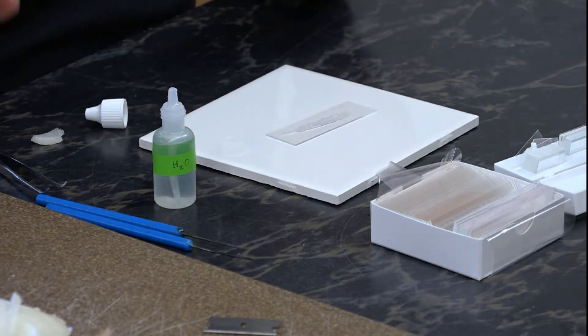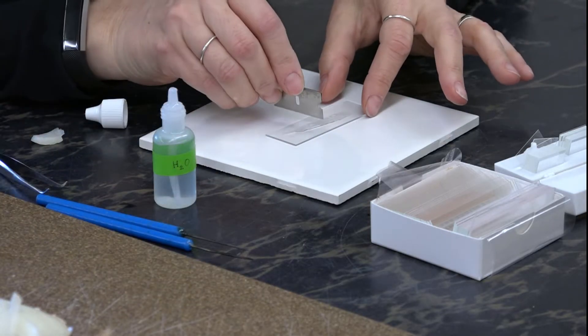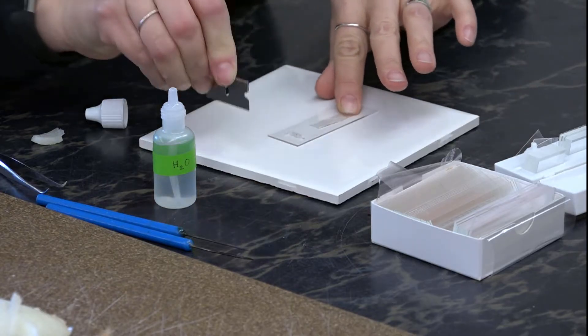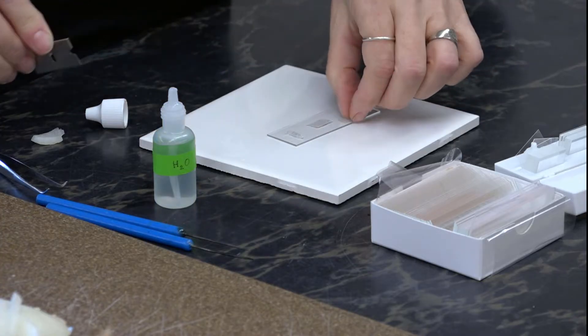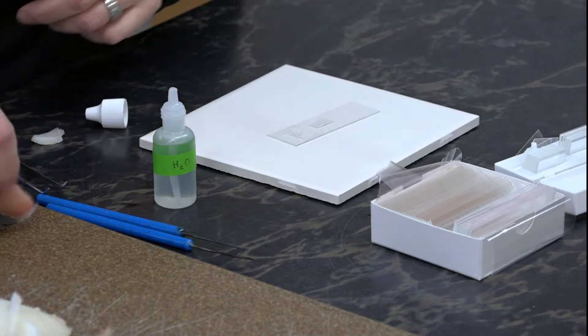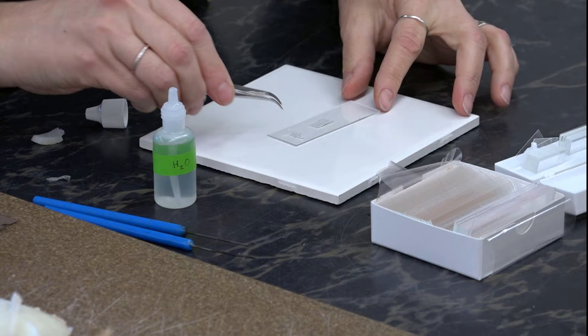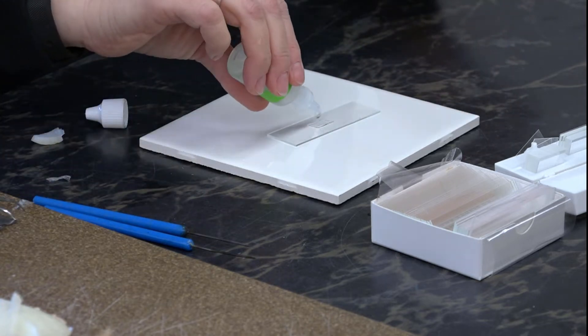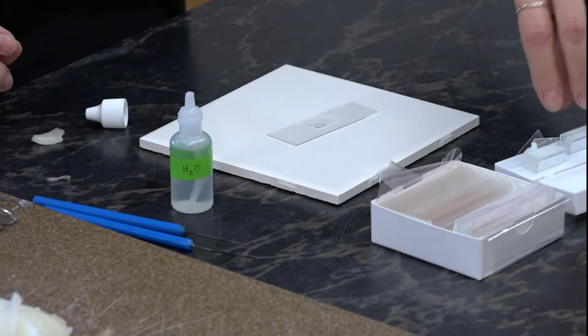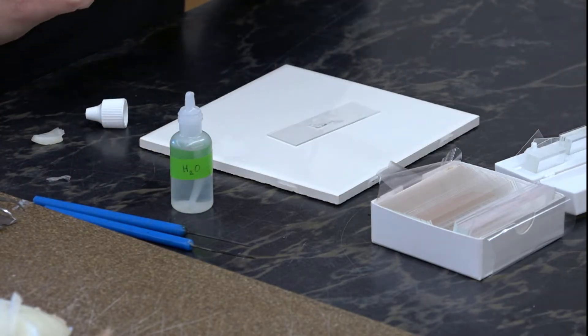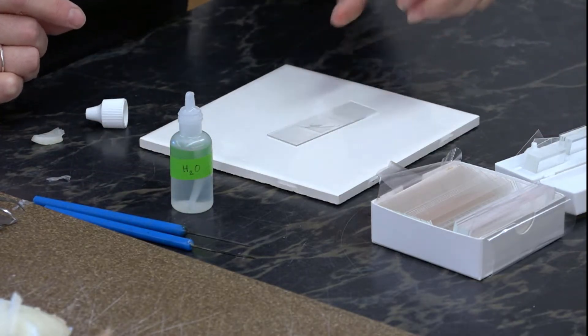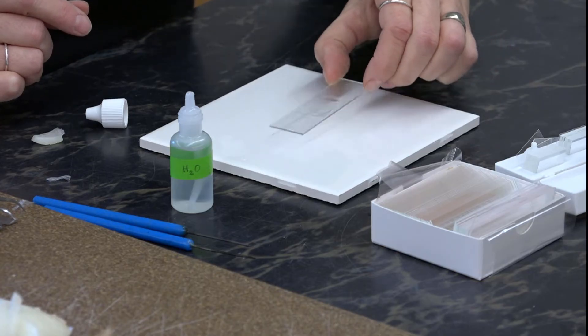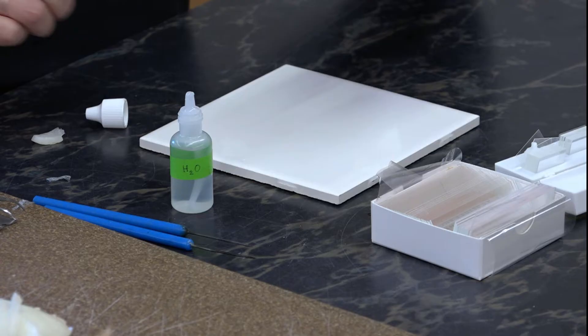Now we have way too much tissue here, so we can trim that. Make sure there's enough water. Add a cover slip, and then you're ready to observe without stain.